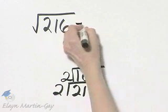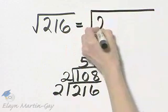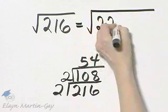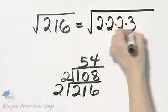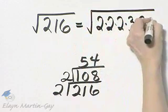If you do this, you'll find that 216 is 2 times 2 times 2 times 3 times 3 times 3.